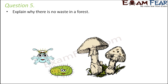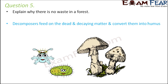So why don't we have waste in a forest? That is because of the process of decomposition. All the waste materials — all the organic waste, the dead and decaying matter, human excreta, animal excreta — everything is decomposed by the decomposers and converted into humus. Therefore, humus is present in the soil, it improves the soil fertility, and we do not see any waste in the forest.